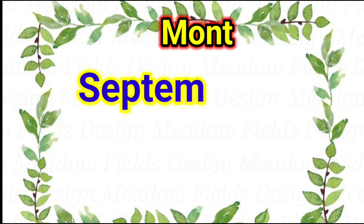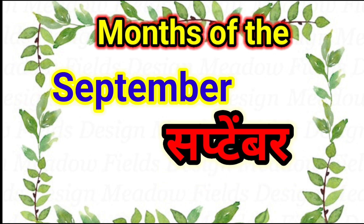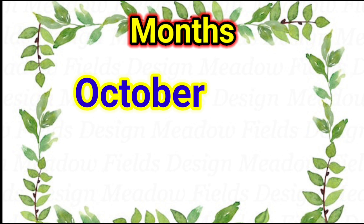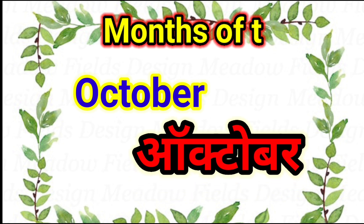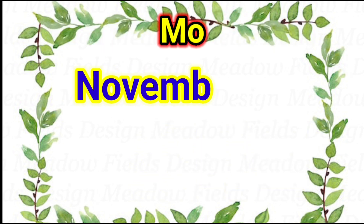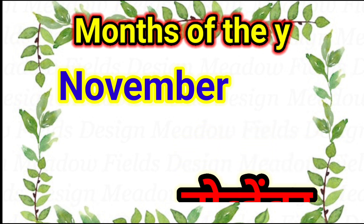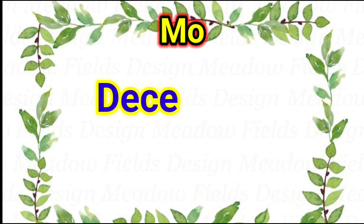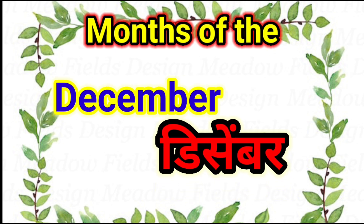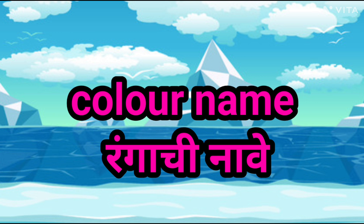S-E-P-T-E-M-B-E-R, September — September is the ninth month of the year. O-C-T-O-B-E-R, October — October is the tenth month of the year. N-O-V-E-M-B-E-R, November — November is the eleventh month of the year. D-E-C-E-M-B-E-R, December — December is the twelfth month of the year.